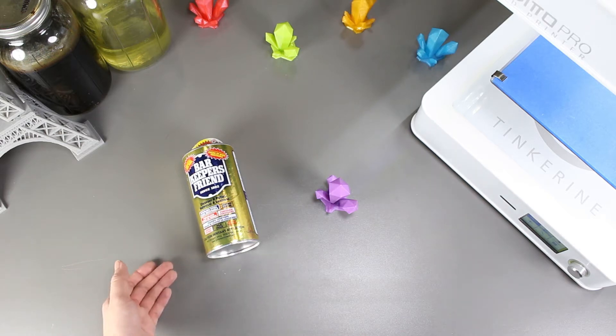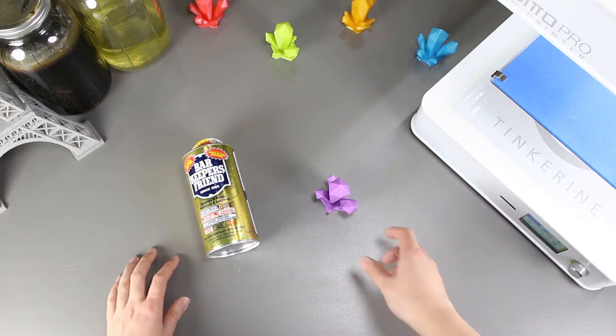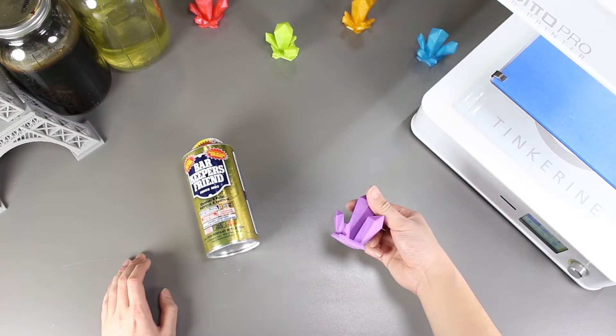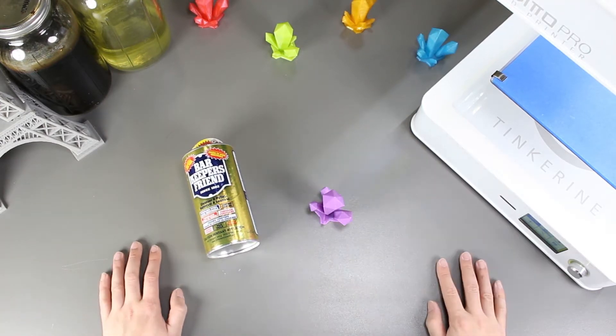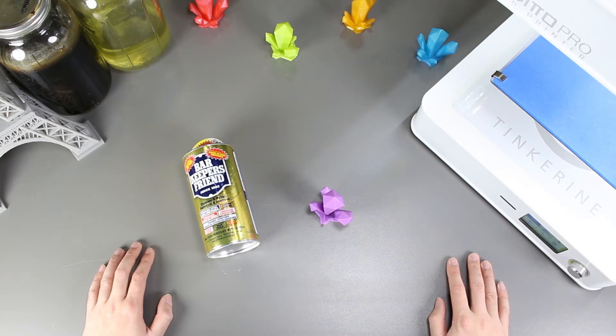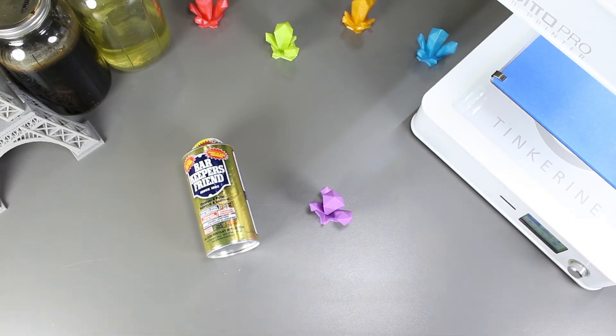Welcome to another episode of Tinkering Experience. Today we are going to try smoothing out our 3D printed PLA model with Bar Keeper's Friend. It was suggested by one of our subscribers, Kenneth McCall, and we're here to find out how it would do.